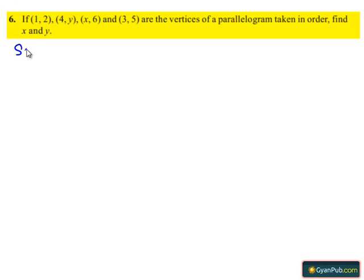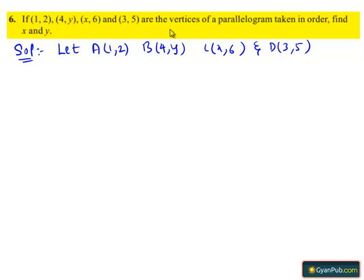Moving on to the solution, let the given points be A(1, 2), B(4, y), C(x, 6) and D(3, 5) which are the vertices of a parallelogram taken in order. We need to find the values of x and y.